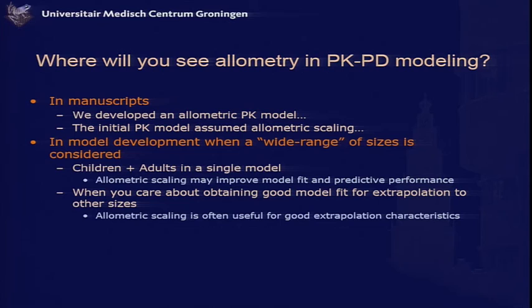Where will you come in contact with allometric scaling? You'll see it in PK models — authors will say they developed an allometric PK model, and often it will simply be assumed as the first initial model. You'll also see allometry particularly when wide ranges of sizes are considered, when people are trying to model children and adults in the same model, where allometric scaling works better than other approaches. It's also important when you care about good model fit for extrapolation outside your data sets — generating data on children and extrapolating toward adults, or the other way around.